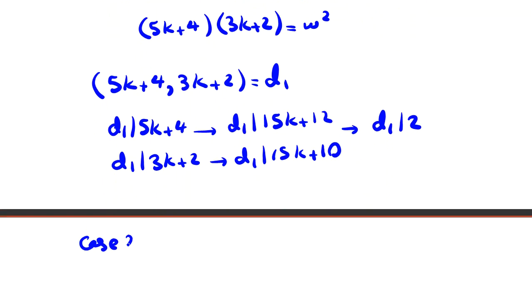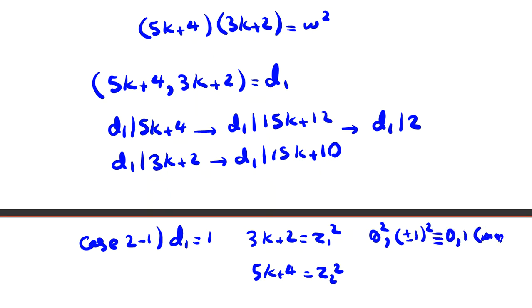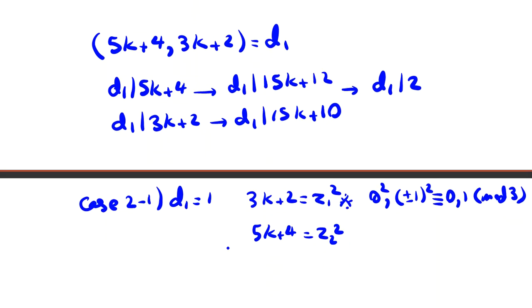Case 2.1 is when d₁ is 1. Each of them is a perfect square. So 3k+2 is z₁² and 5k+4 is z₂². But we know that if we consider perfect squares, 0², ±1² mod 3 can be 0 or 1. So we don't have 2 mod 3 as a perfect square.